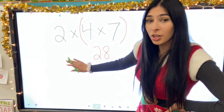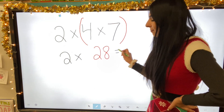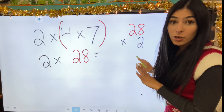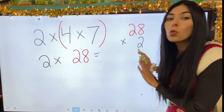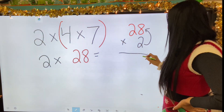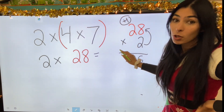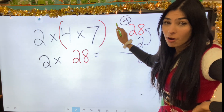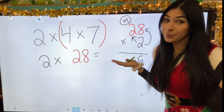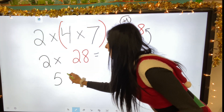I don't want to leave out my other friend, so I'll bring down the two. Now I have two times twenty-eight. Since it's double digits, I'll make it vertical. Keep that two in the ones place. Times up: eight times two is sixteen — put the six and carry the one. Times diagonal: two times two is four, plus one equals five. Our answer is fifty-six.